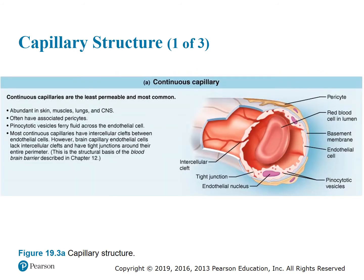Figure 19.3a shows a continuous capillary. Continuous capillaries are the least permeable and most common. They're found in the skin, muscles, lungs, and CNS, and often have associated pericytes. Pinocytotic vesicles ferry fluid across the endothelial cell. Most continuous capillaries have intercellular clefts; however, brain capillary endothelial cells do not have intercellular clefts and have tight junctions around their entire perimeter, accounting for the blood-brain barrier.